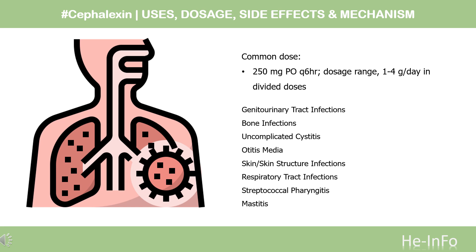Respiratory tract infections: 250 mg PO Q6H, dosage range 1–4 g/day in divided doses. Streptococcal pharyngitis: 250 mg PO Q6H or 500 mg PO Q12H, dosage range 1–4 g/day in divided doses.